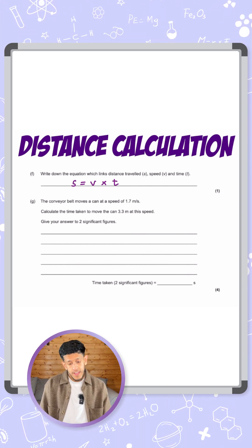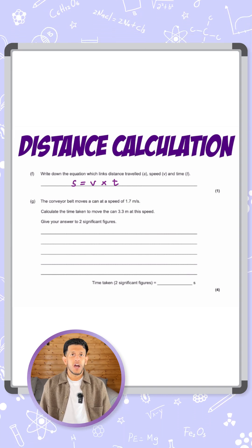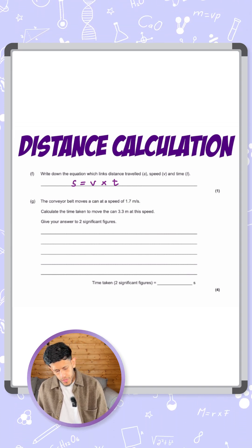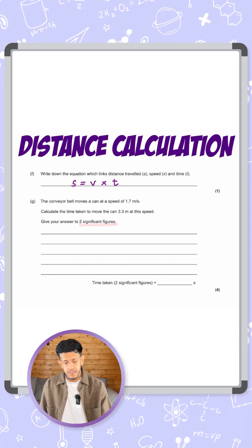The second question says the conveyor belt moves a can at a speed of 1.7 meters per second. Calculate the time taken to move the can 3.3 meters at this speed and give your answer to two significant figures.